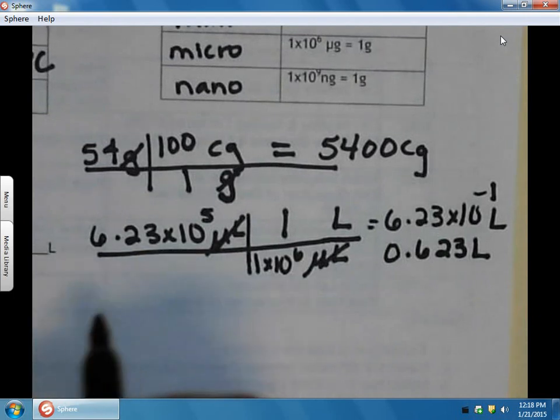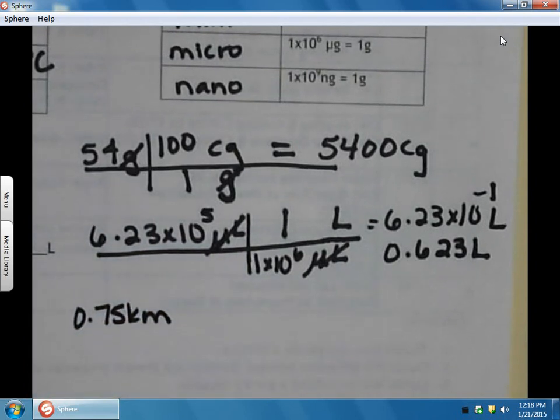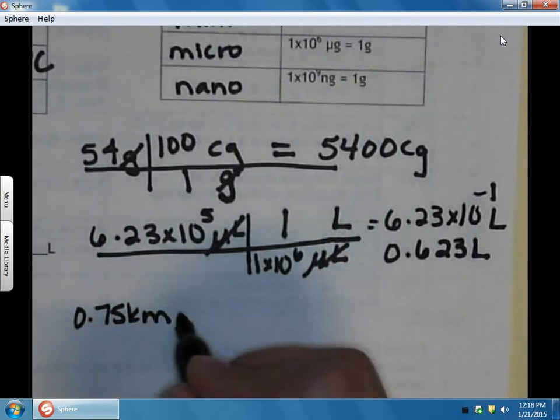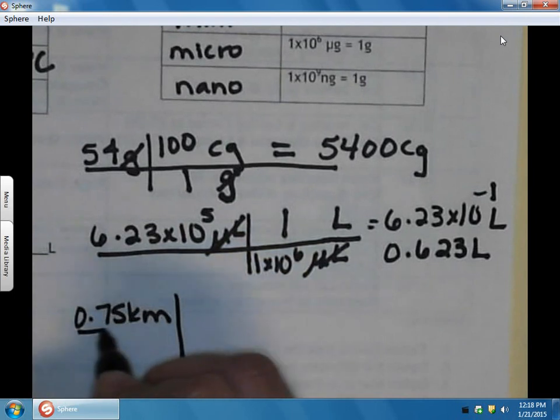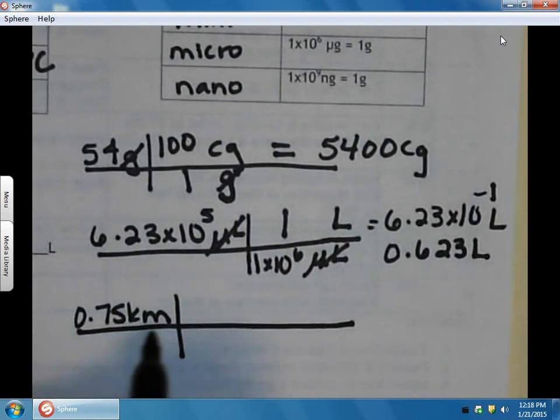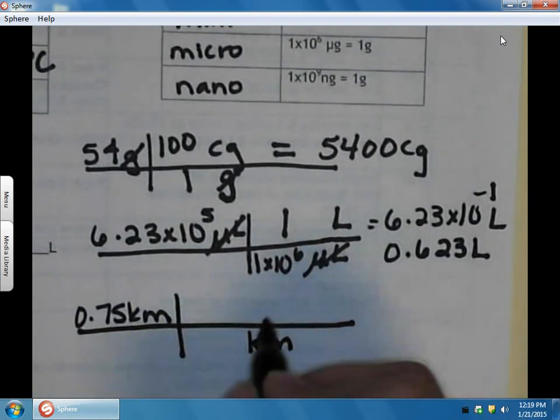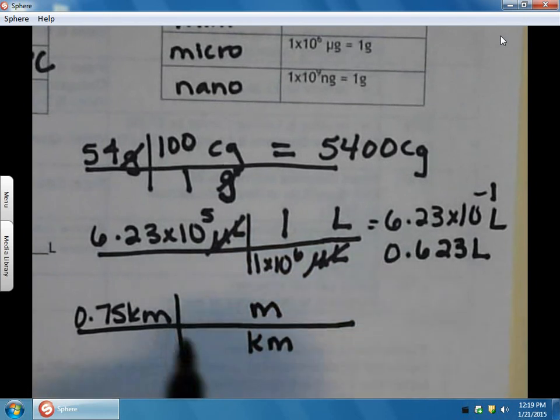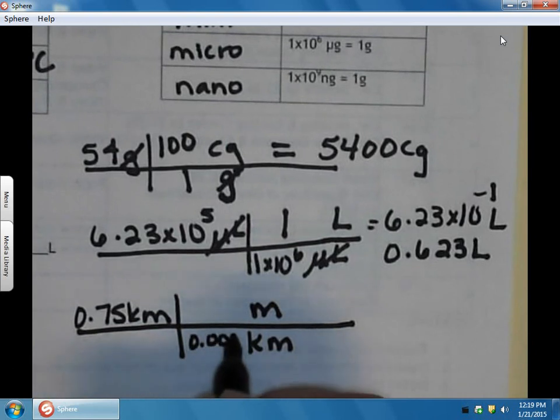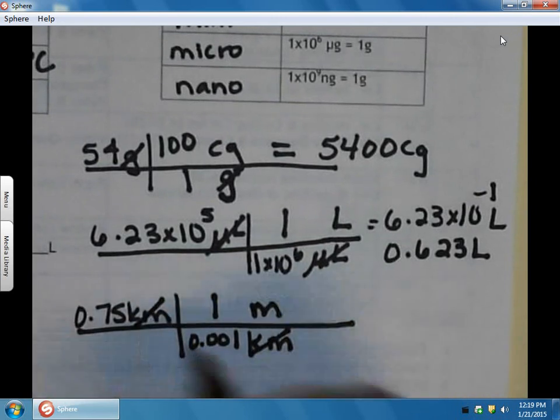The next problem, we have 0.75 kilometers and we want to know how many nanometers. This problem is a little bit different because we're not starting from the base unit, so this will require two steps. The first step, we'll go to the base unit. If we have kilometers on top, we want it to cancel, so we put kilometers on the bottom. Our base unit then would be meters. We learned earlier that 0.001 kilometers equals 1 meter. So kilometers on the bottom and top would cancel.